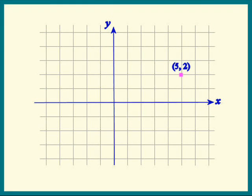Here's one of them: five comma two. Then he named another point: negative four comma three.